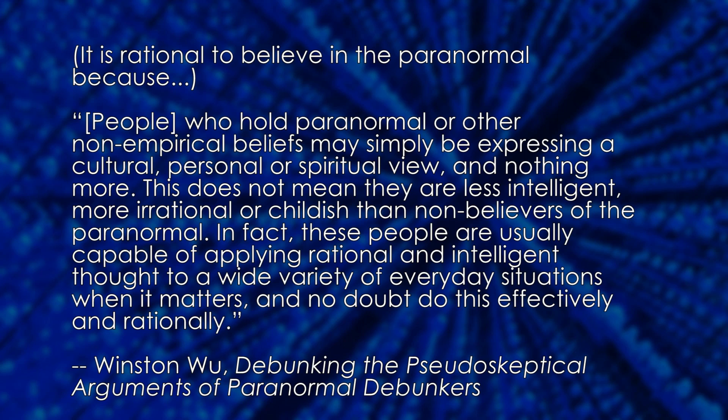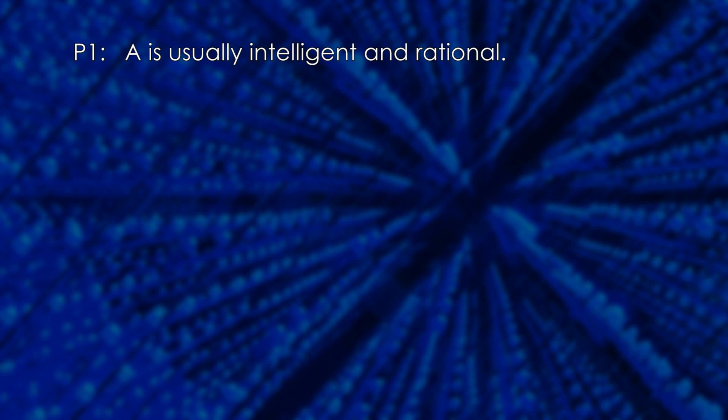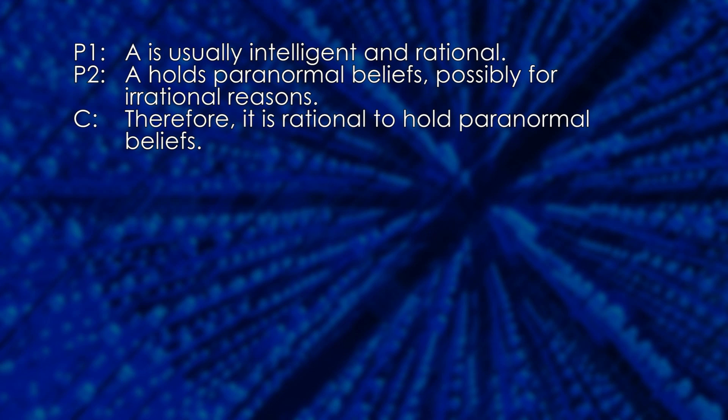When we take the context into account, we can present his argument like this. Premise 1: A is usually intelligent and rational. Premise 2: A holds paranormal beliefs, possibly for irrational reasons. Therefore, it is rational to hold paranormal beliefs.